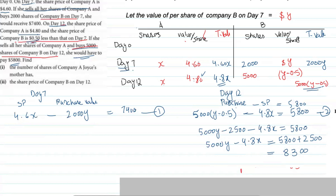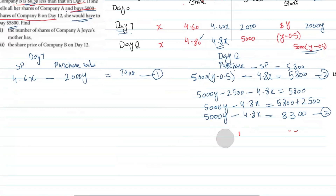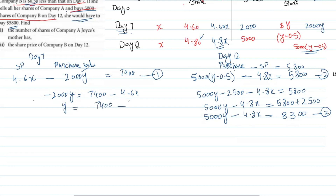We'll use the elimination or substitution method. Let's make y the subject from equation one. Equation one: 4.6x − 2000y = 7400. Rearranging: −2000y = 7400 − 4.6x, so y = (7400 − 4.6x) / (−2000), which we can write as y = (4.6x − 7400) / 2000. Now we substitute this expression for y into the simplified equation two.